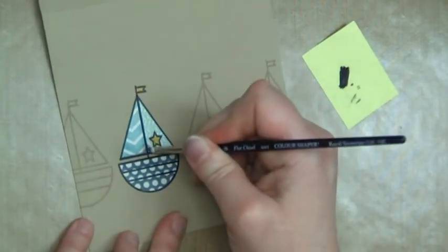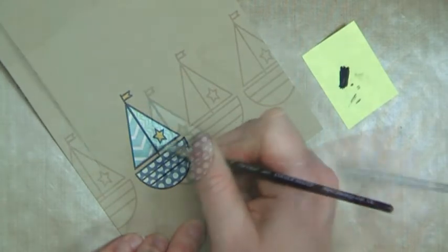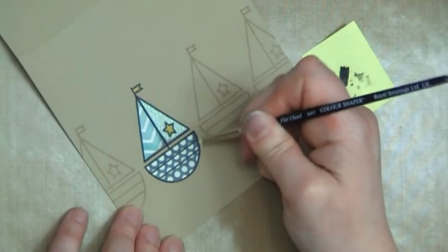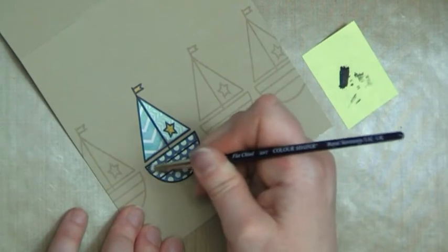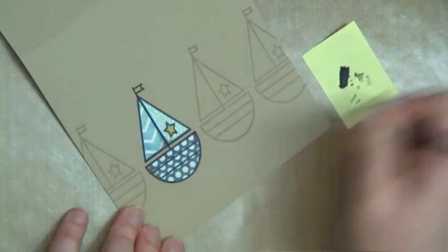I'm not trying to create realism here at all because it is using paper piecing, but I am trying to give it a little bit of depth. Charcoal is a really easy way to be able to add that little bit of shadow.